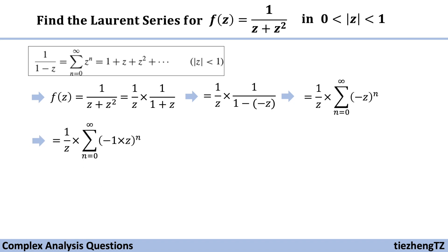We can put the negative 1 within the parentheses out, so it becomes negative 1 to the power of n times z to the power of n. Then 1 over z times that becomes z to the power of n minus 1. Of course we can further update this result.